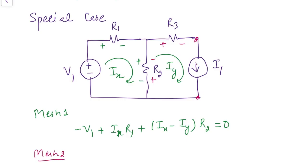In the second mesh, the branch contains a current source supplying current I1 and the mesh current is Iy. Since it is a current source, the current in that branch remains fixed. This means one of the mesh currents is directly known: the mesh current equals the current supplied by the source. If a current source is in the outer branch of any mesh, the answer for that mesh current is directly known.